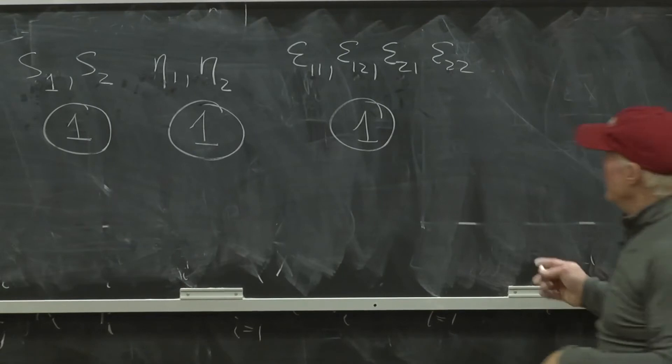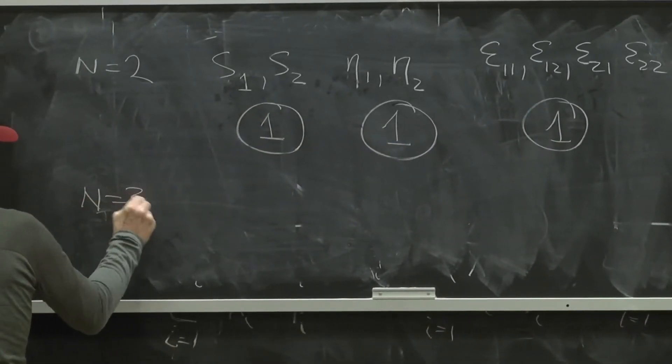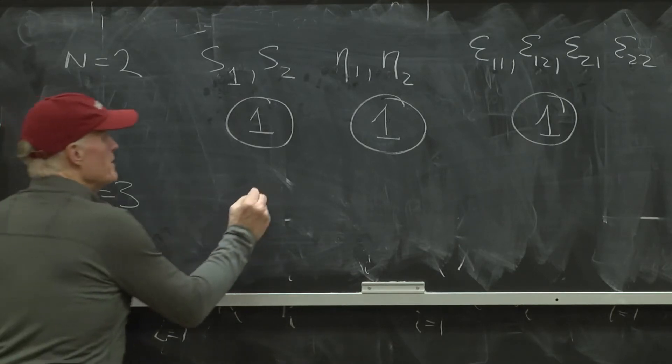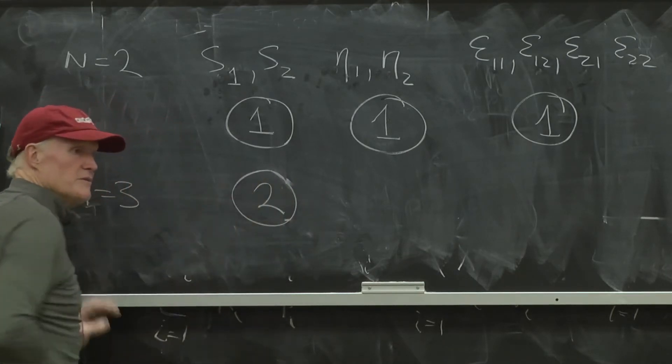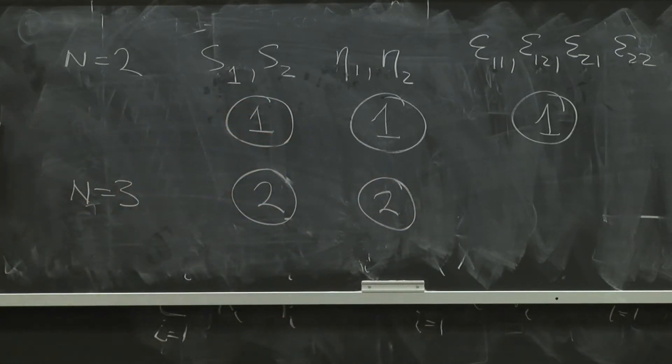Now, what would happen if I went to n equals 3? What would the corresponding numbers be? Well, now there would be 2 independent shares. Everybody agrees? Once I know 2 of them, I know the third. There would be 2 independent income elasticities. So the only question is how many independent price elasticities are there?